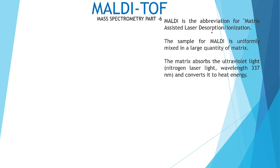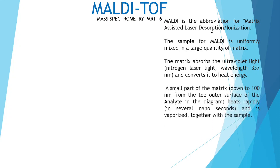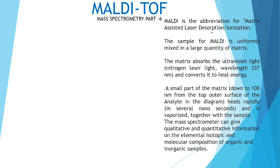The matrix absorbs ultraviolet nitrogen laser light at a wavelength of 337 nanometers and converts it to heat energy. A small part of the matrix, down to 100 nanometers from the top outer surface of the analyte, heats rapidly in several nanoseconds and is vaporized together with the sample.